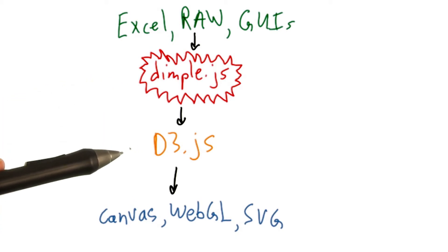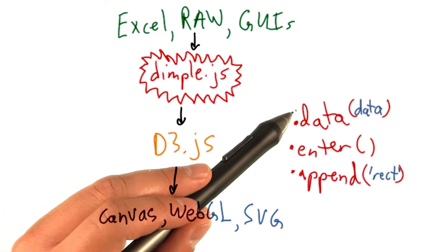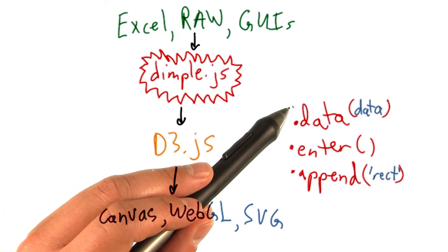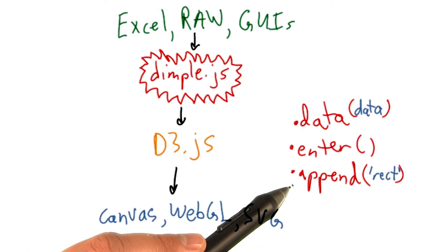This pattern that D3 defines to bind data to some elements on the page is often one of the most confusing topics for newcomers to D3 to understand,